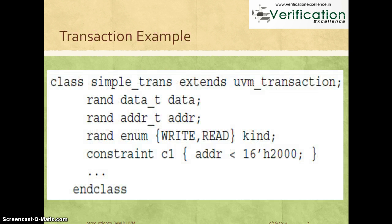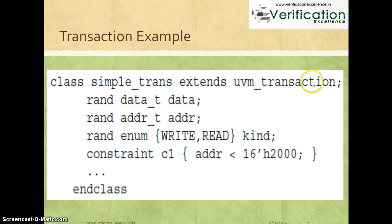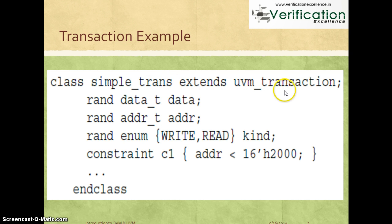Let's look at a code example to make this clearer. Using the same example of a read or write transaction on the bus, here is a sample class definition — class simple_transaction — which extends from uvm_transaction. As mentioned, the UVM base library provides a base class called uvm_transaction. For now, understand that any transaction you define for your testbench needs to extend from the UVM or OVM transaction based on which methodology you are using.